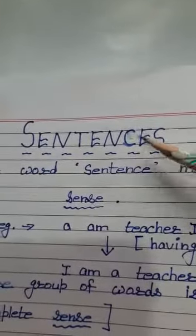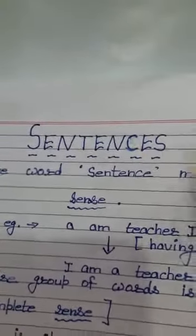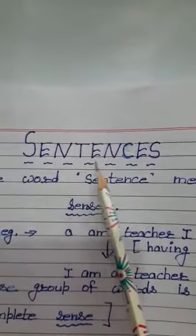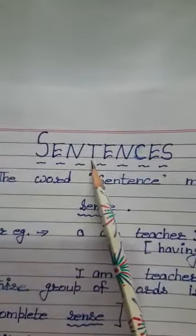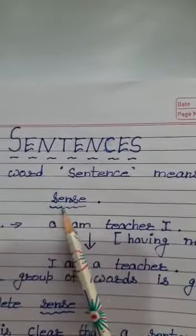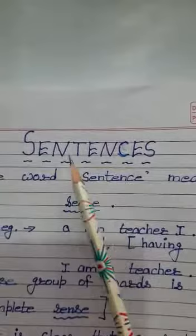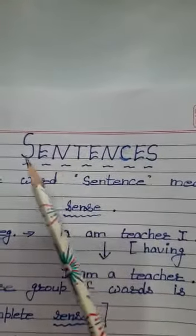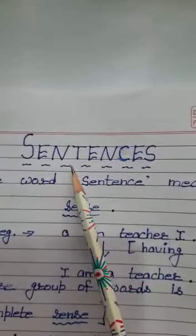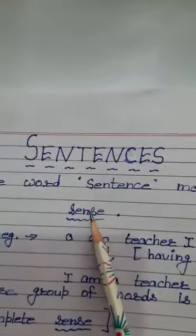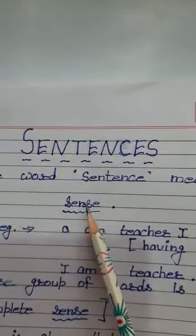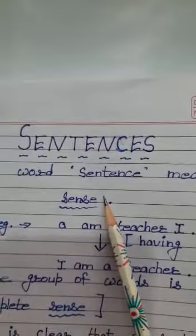Here we are with our topic: sentences. Whenever we speak this word 'sentences,' the meaning is quite clear. It means the word 'sentence' means a sense. The word 'sense' is derived from this very word 'sentence.' So we see that a sentence relates to a group of words having some sense — words jinka kuch sense nikale, jinka kuch matlab nikalta hai, kuch meaning nikalta hai.